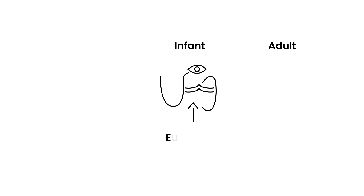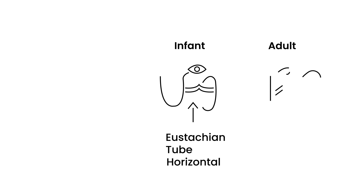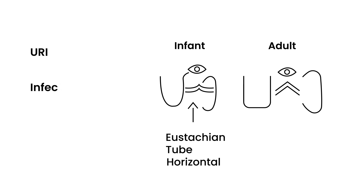That is representing the eustachian tube, and essentially it's a structure that connects the nose to the ear. In infants, it's more horizontal, as I've tried to draw it there, whereas in an adult, the eustachian tube between the nose and the ear will be a little bit more angled. The fact that the angle in children is more horizontal makes it more likely that during an upper respiratory tract infection, infected fluid can go from the nose to the ear more easily.